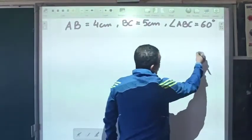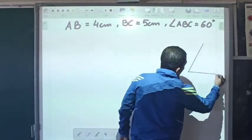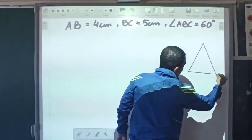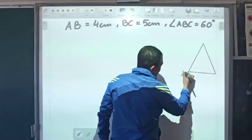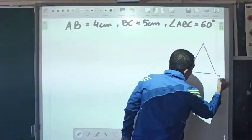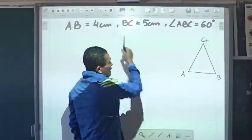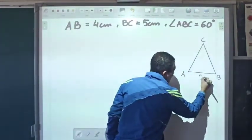So I'll first draw my rough diagram. From this diagram, I can say that this is A, this is B, and this one here is C. AB is 4 cm, so this is 4 cm.